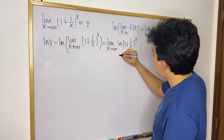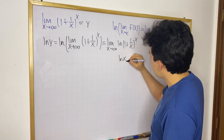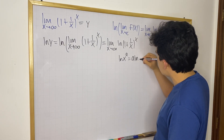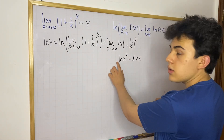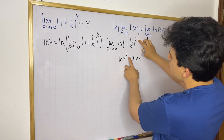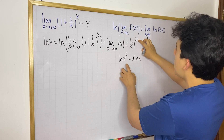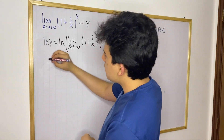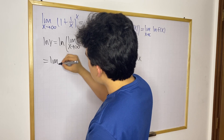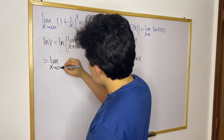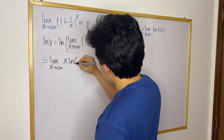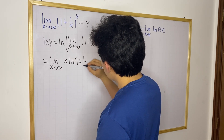There is another property of logarithms: ln(x^a) equals a times ln(x) — you can move the exponent to the front. Here the exponent is x, so we move x to the front of the ln. This gives us the limit as x approaches infinity of x times the natural log of (1 + 1/x).